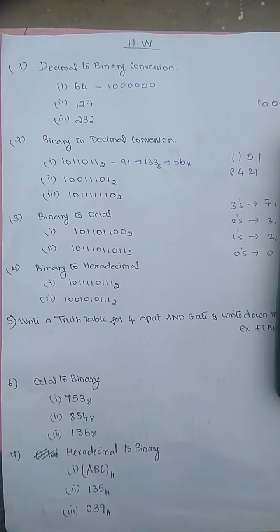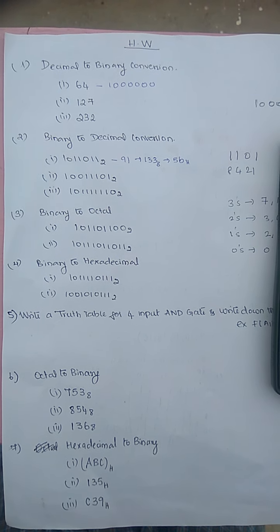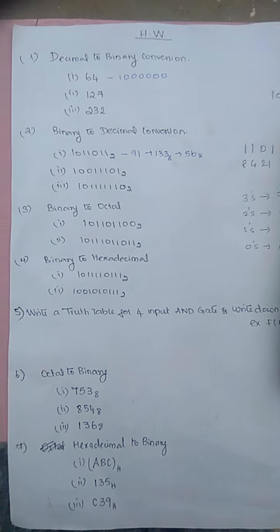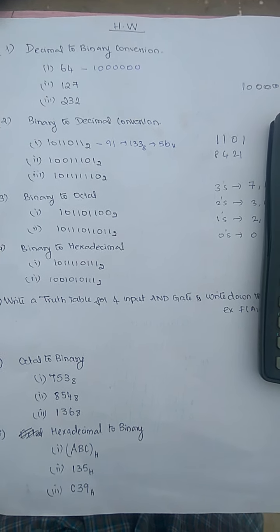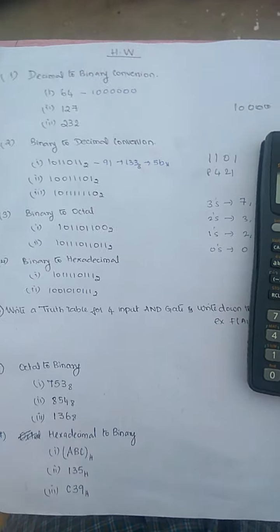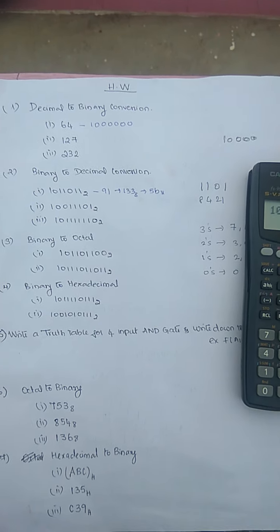For decimal value, you have to take the base value as 10, or if there is no base, you have to consider that. For 4-input AND gate, since they are given 4 inputs, 2 power n where n is number of bits...